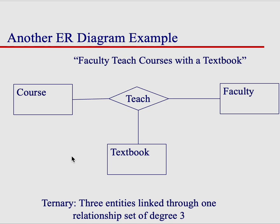So it's not just course and faculty if you want to keep track of a textbook, and it's not just textbook and course, and it's not just textbook and faculty, because the textbook is dependent on the course, which is also dependent on the faculty member. Therefore, this is a ternary example.